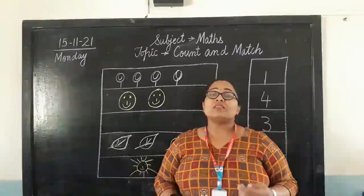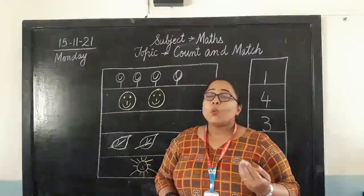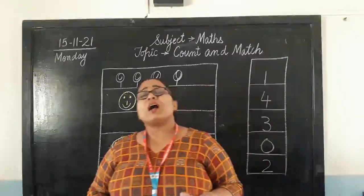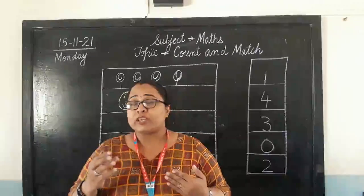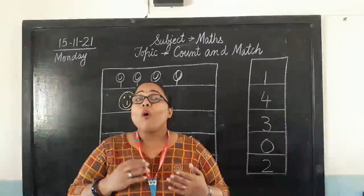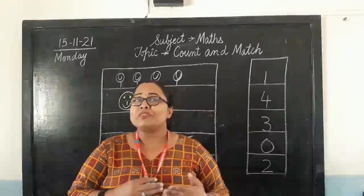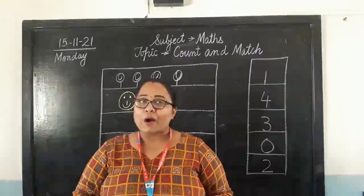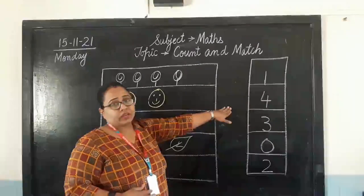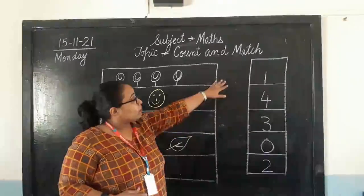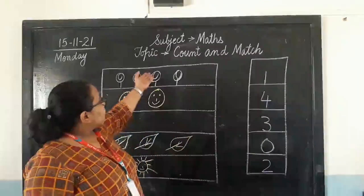Now, when we have learnt about our countings, we have learnt how we can count different objects and see what number we have. Today, we are going to have a revision of the similar book. How we will do? So, we are given objects and number together. But, the number written is not in proper order.